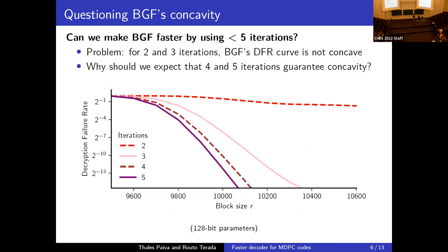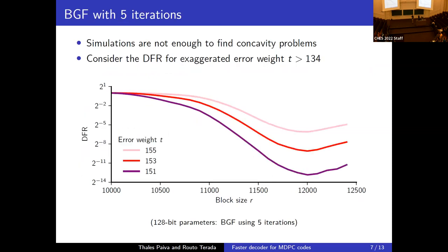The main question is: can we make BGF more efficient, using fewer than five iterations? When simulating BGF with two or three iterations, the DFR curve is clearly not concave, so those numbers of iterations cannot be used. But this also raises the question: why should we expect concavity at four or five iterations? Unfortunately, simulations cannot confirm concavity for four and five iterations because the inflection point may occur at a DFR too low to observe with simulations.